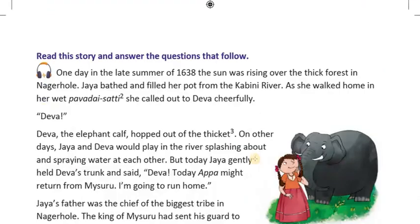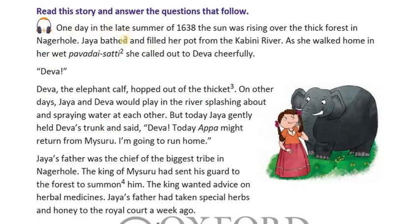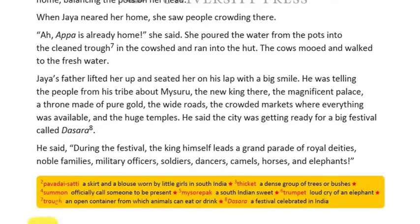Now come to the main content of this lesson. Read this story and answer the questions that follow. One day in the late summer of 1638, the sun was rising over the thick forest in Nagarhol — Nagarhol is the name of a place. Jayabath filled her pot from the Kabini river. As she walked home in her Pavadai Shati — a skirt and blouse worn by little girls in South India.